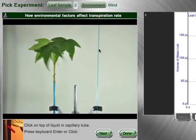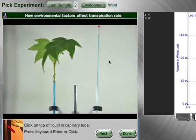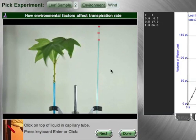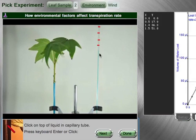In this lab you will track the level of water in a capillary tube that's connected to the plants by clicking on the height of the water. As the water goes down, you know water has evaporated out of the leaves, and therefore the leaves are taking in more water from the capillary.